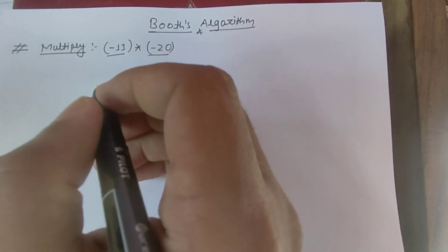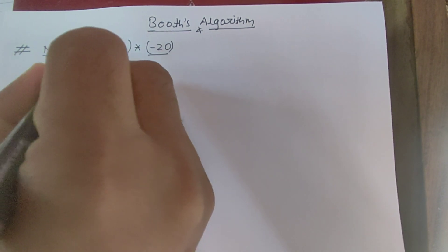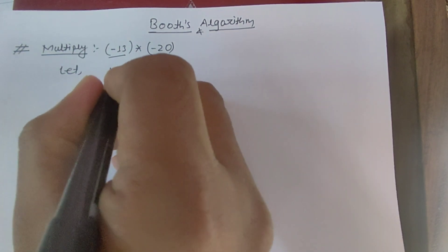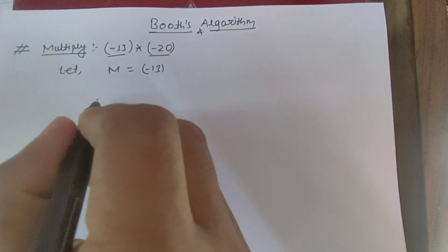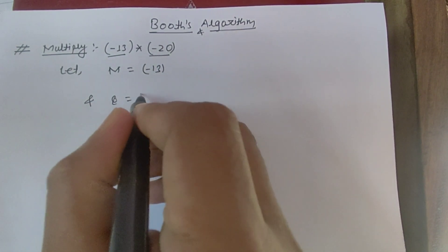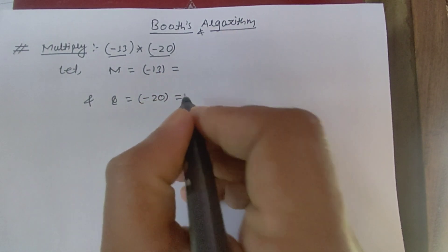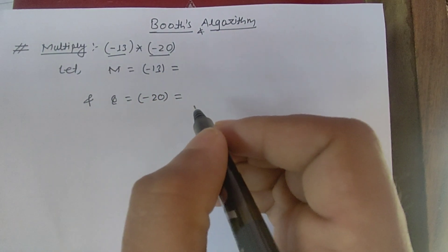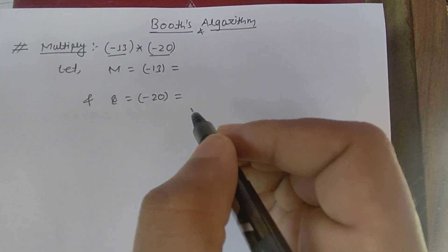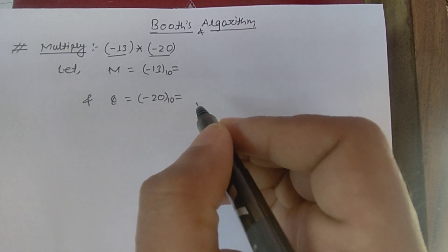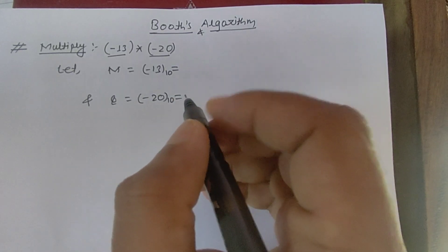Let M equal minus 13 and Q equal minus 20. To perform this multiplication using Booth's algorithm, we have to convert these decimal numbers into binary because processors only work in binary format.